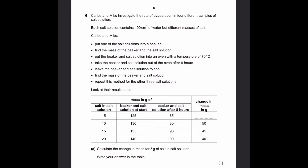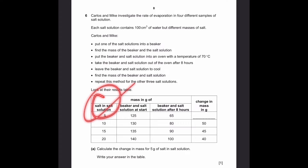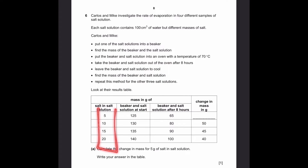Question 6. Carlos and Mike investigate the rate of evaporation in four different samples of salt solution. Each solution contains 100 cm³ of water but different masses of salt. Part A: Calculate the change in mass for 5 grams of salt in salt solution. The change in mass is simply 125 minus 65, which is 60 grams. That's the answer.